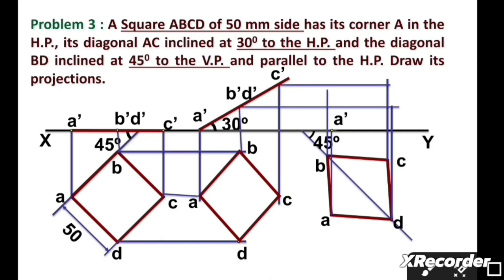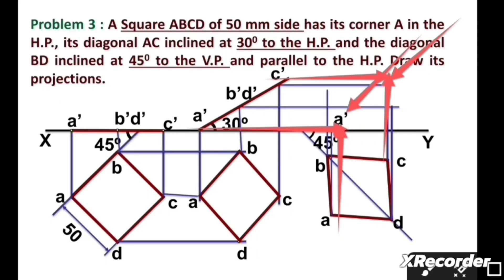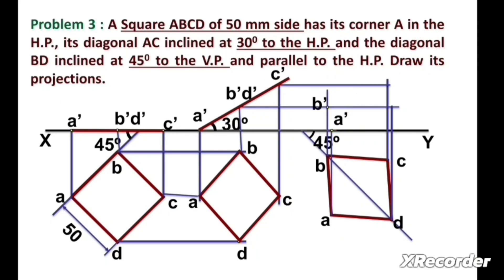From point A, we draw a vertical line and intersect it with the horizontal line from A dash to get point A dash. Similarly from C, we draw a vertical line and intersect with the horizontal line from C dash to get point C dash. In this way, we mark all points A dash, B dash, C dash, and D dash. We then join all these points — A dash to B dash, B dash to D dash, C dash to D dash — to complete the solution of this problem.